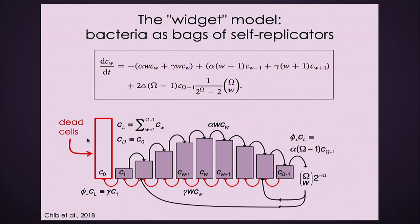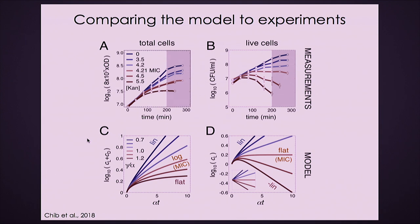How many parameters are in the widget model? There's alpha, gamma, and omega. At least one is just a unit of time which I can use to calibrate, gamma can be varied to capture adding more antibiotic, so the only parameter left is omega. This example uses omega equals 10 — it's not a fit, just a demonstration. We're capturing a lot of the phenomenology with very few assumptions: at very low antibiotic the number of cells grows exponentially; at very high antibiotic it decays exponentially; at intermediate concentration the number of living cells is flat. We also capture the little bump that happens when lots of widgets exist and the antibiotic takes time to destroy them all, so cells can still manage to divide briefly.